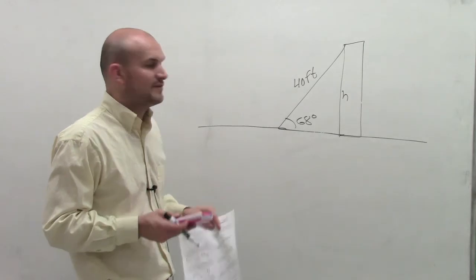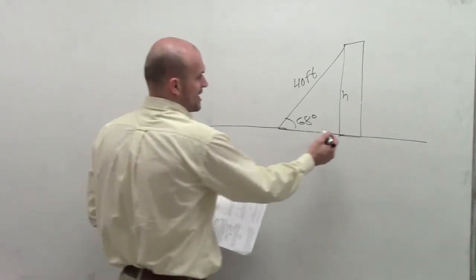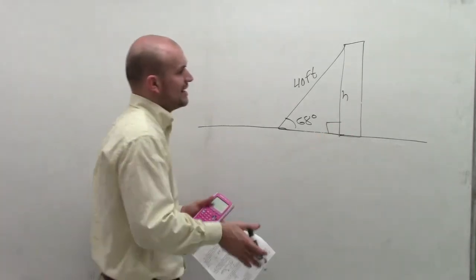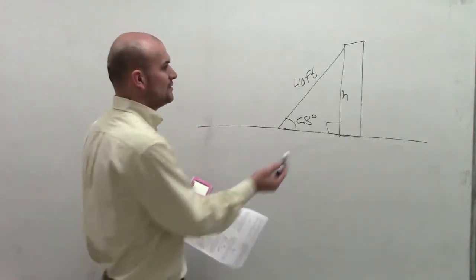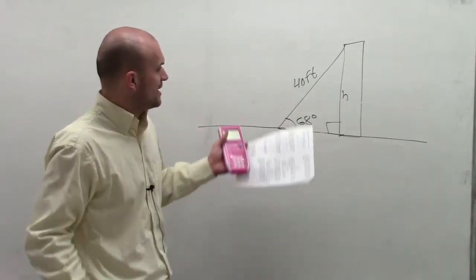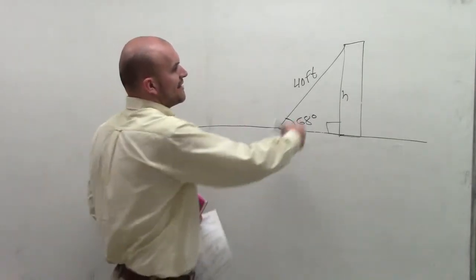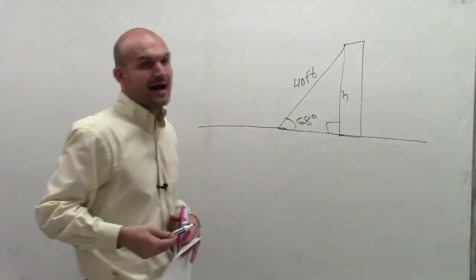So now what I need to do is figure out what h is. I look at my triangle and make sure that since I drew a horizontal and now I have a vertical, I have a right angle. From my angle of 68 degrees, I have an opposite side and my hypotenuse.